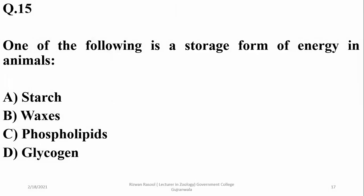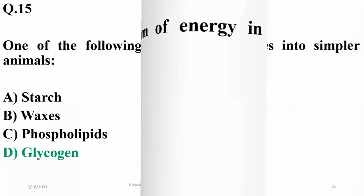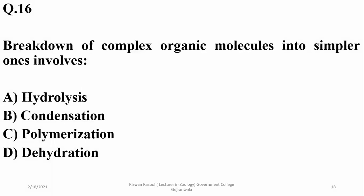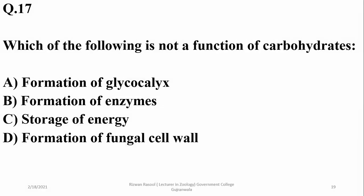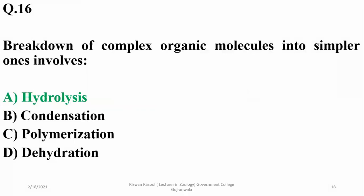One of the following is a storage form of energy in animals. Animals store energy in the form of glycogen, but plants store energy in the form of starches. Breakdown of complex organic molecules into simpler ones is hydrolysis by the addition of water, or condensation or polymerization.